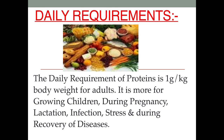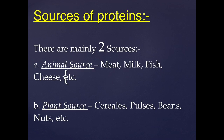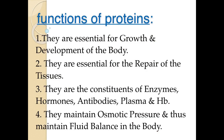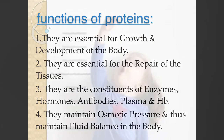The daily requirement of protein is higher in growing children, during pregnancy, lactation, infection, stress, and during recovery from diseases. For adults, the daily requirement is one gram per kilogram of body weight. Sources of proteins include animal sources like meat, milk, fish, and cheese, and plant sources like cereals, pulses, beans, and nuts.